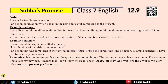Present Perfect Tense describes an action in the past that has a result now. For example: 'I have lost my pen' means that I do not know where it is now. The three words very often used with Present Perfect Tense are: just, already, and yet.